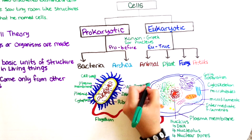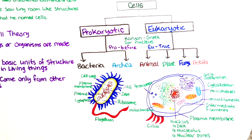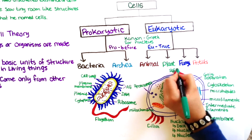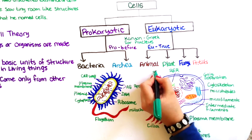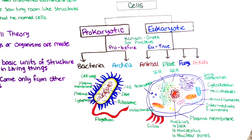Peroxisomes perform oxidative metabolism of nutrients, using oxygen to generate water. The endoplasmic reticulum is continuous with the outer membrane of the nucleus and consists of the rough endoplasmic reticulum and smooth endoplasmic reticulum.